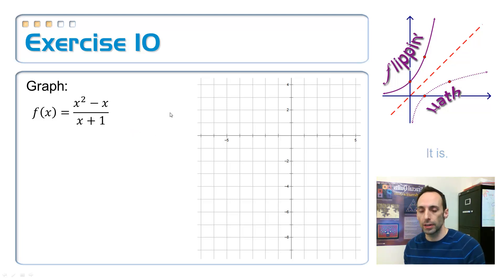So let's go ahead and factor. Factor as usual. Factor in the top. Looks like all I can do is pull out a GCF. So it's x times x minus 1, and on the bottom, x plus 1. It doesn't factor any. That's it in simplest form there.